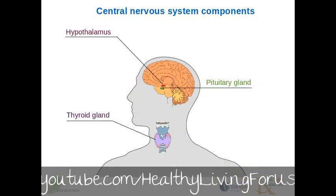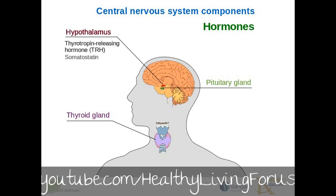Let us first look at the hormones that these three components of the endocrine system produce. The hypothalamus produces thyrotropin-releasing hormone, TRH, and somatostatin. One interesting aspect of TRH is that it is only three amino acids long, making it a fairly small biomolecule.